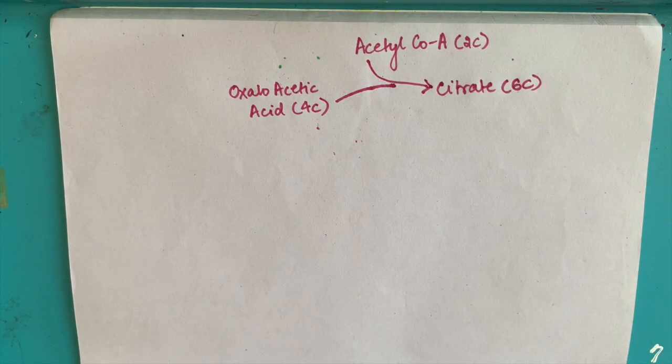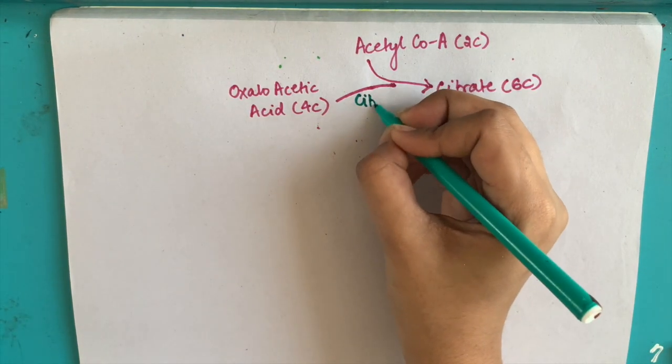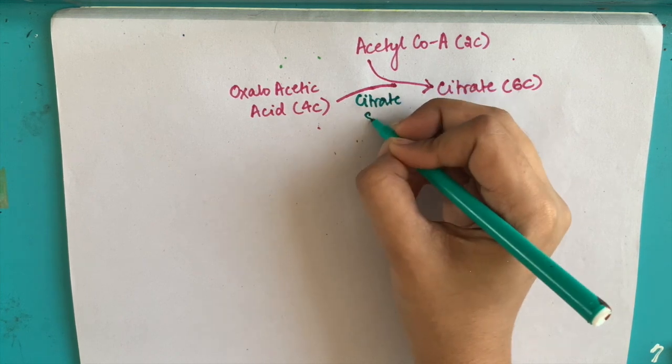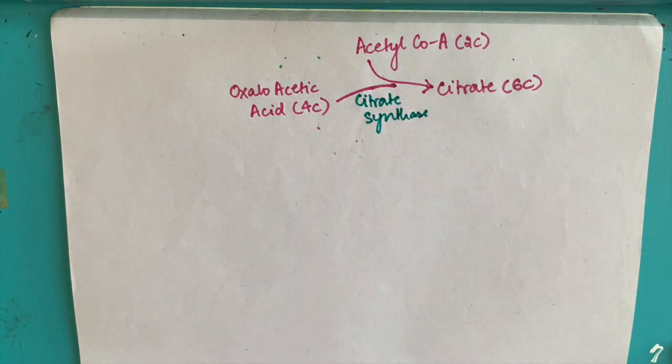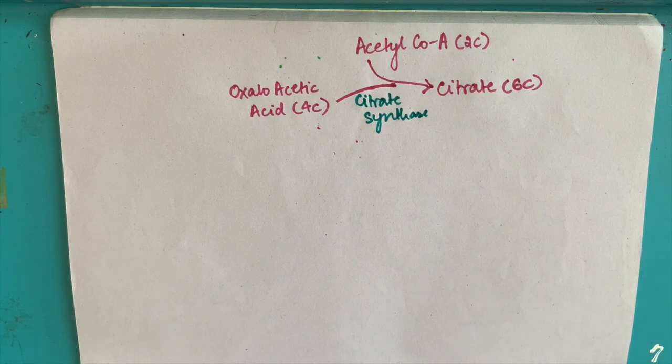Each step of TCA cycle is catalyzed by a separate enzyme. This step is catalyzed by citrate synthase, and from the name you can know that citrate is being synthesized.